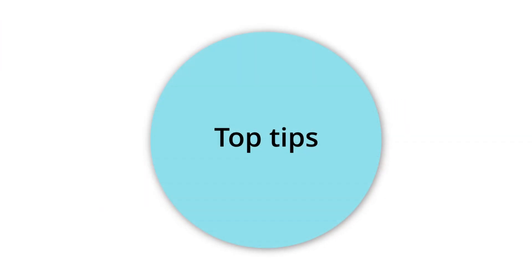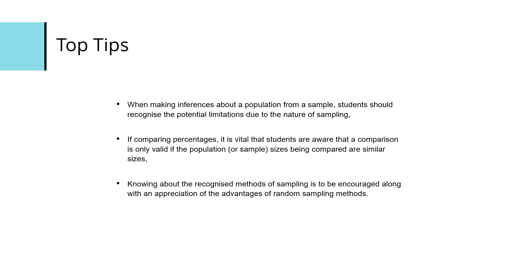For top tips on sampling: when making inferences about a population from a sample, students need to recognise the potential limitations due to the nature of sampling. Without a census you don't have the complete picture, and even with care to avoid bias, a sample may still not represent the population exactly. When comparing percentages, it is vital that students are aware a comparison is only valid if the population or sample sizes being compared are similar. Knowing recognised sampling methods and the advantages of random sampling is also to be encouraged.